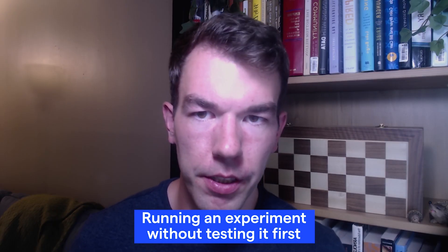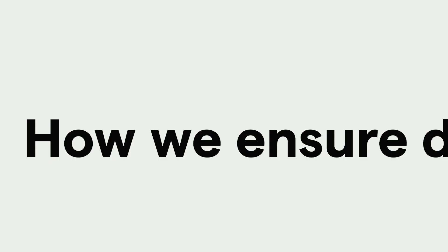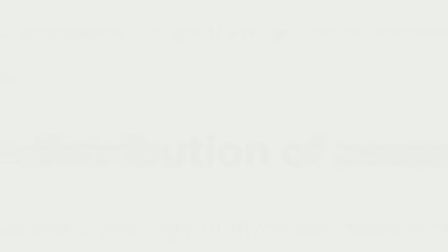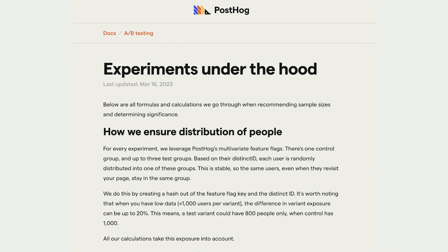Fourth is running an experiment without testing it first. Sometimes we're so eager to get results that we jump straight to running the experiment on all our users. This is fine if everything's set up correctly, but if you've made a mistake you might not be able to rerun your experiment — because rerunning experiments can show the same change to the same users, making your results unreliable.